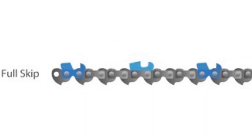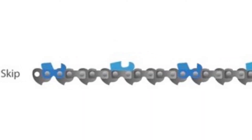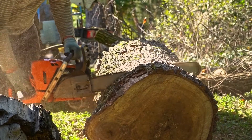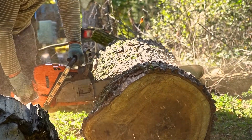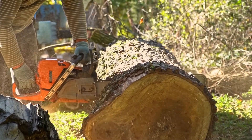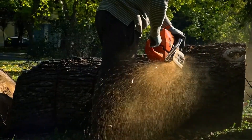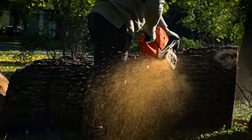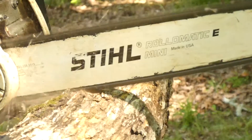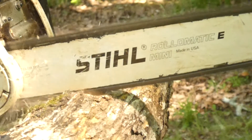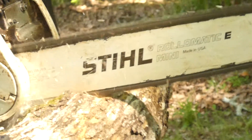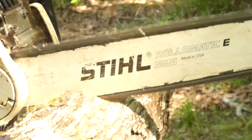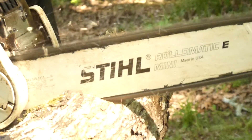Full skip chains have a cutter every third drive link. Since there is less drag produced, they can be used with larger bars and larger saws, and they are also less prone to clogging. The drawbacks are that they are not great for small cuts, they are much more prone to kickback, not as smooth, and they tend to vibrate more.